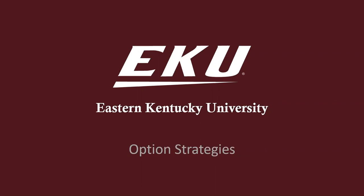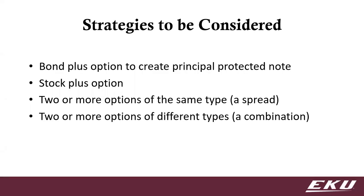Today I'm going to go over option strategies. We talked about options last time — the structure of the markets and the options themselves — so this time we're going to talk about how we use those. We can combine bonds with options to get a principal protection note, combine stock with options, or combine two options of the same type — like two calls or two puts — which is called a spread. We can also combine options of different types, a call and a put, which is called a combination.